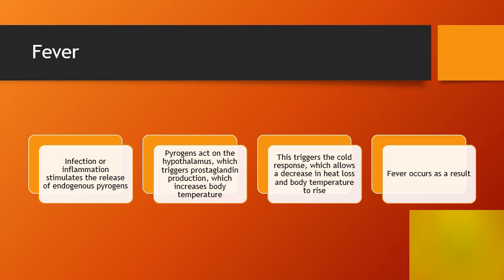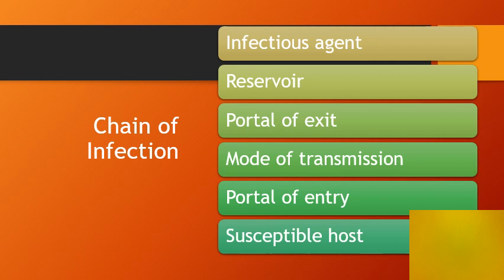Typically for fever we can give antipyretics to lower the fever and increase comfort. It is important to distinguish between fever and hyperthermia. Hyperthermia occurs because of an unregulated rise in core temperature — for example, in the unfortunate incidents of children left in hot automobiles. In neurologically intact children, the body does not reach the temperature level seen in a hyperthermic child.